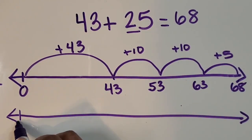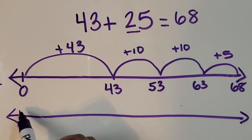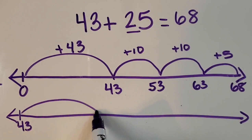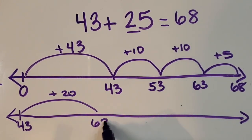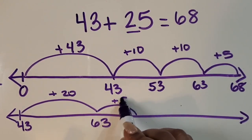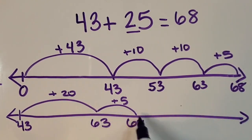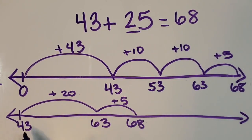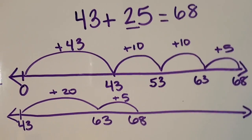This time I'm going to make a jump of 20, which gives me 63, and then a jump of 5, which gives me 68. You don't necessarily have to end at the end of the number line — just where you find the sum after you've added your second addend. So we have 43 plus 20 plus 5, which gives us 68. I'm going to switch boards.